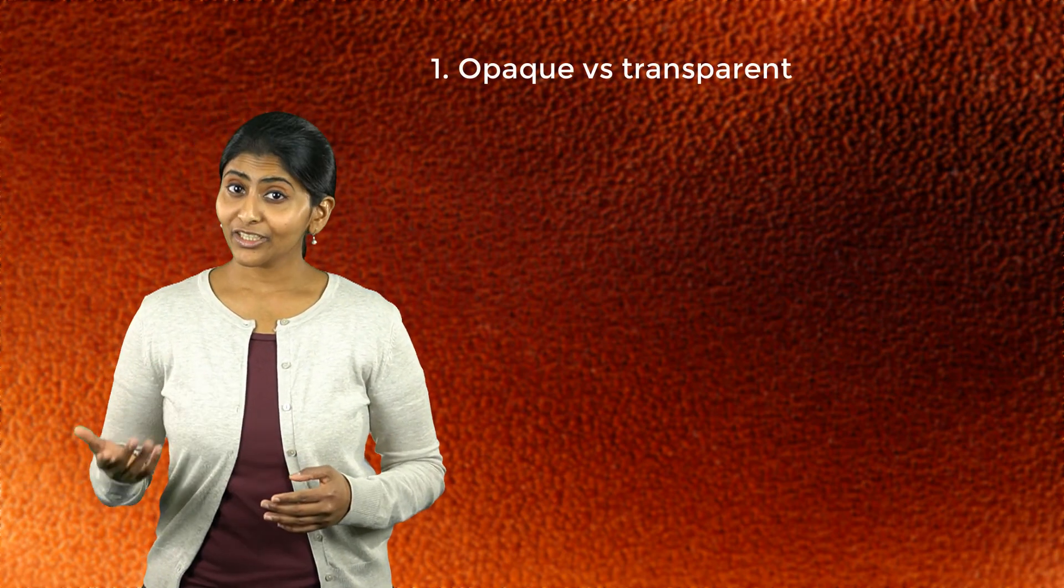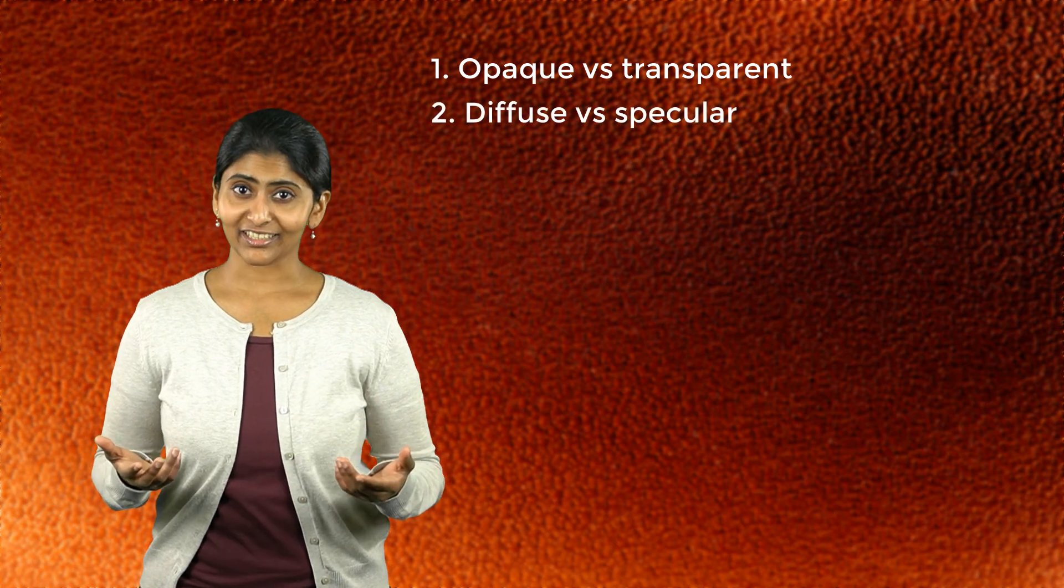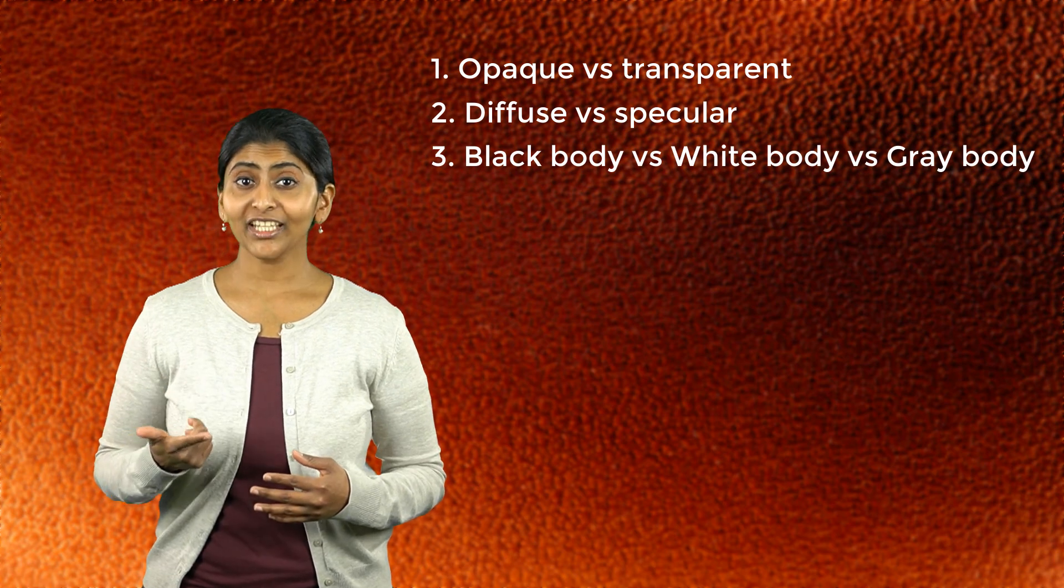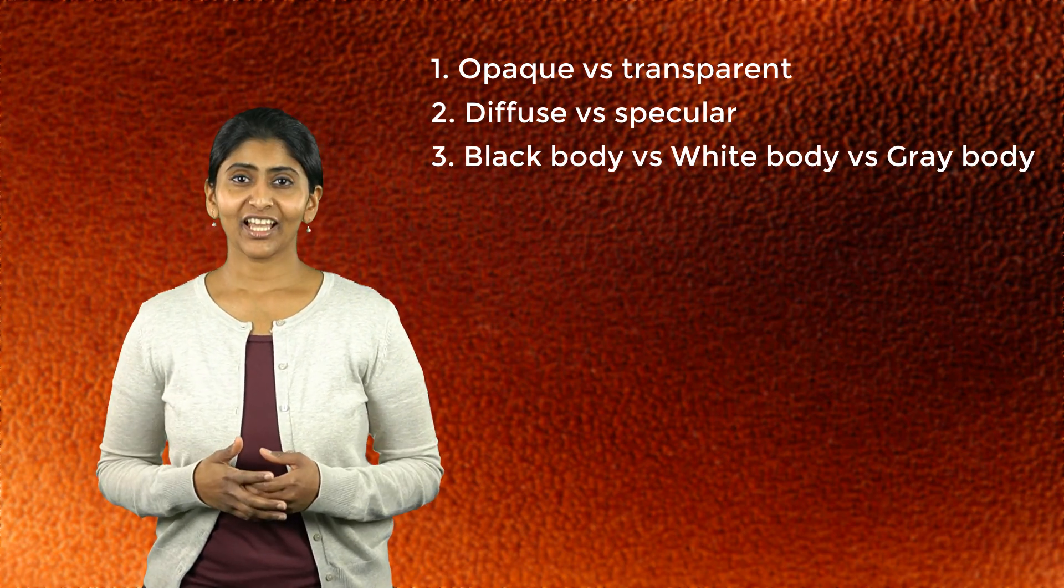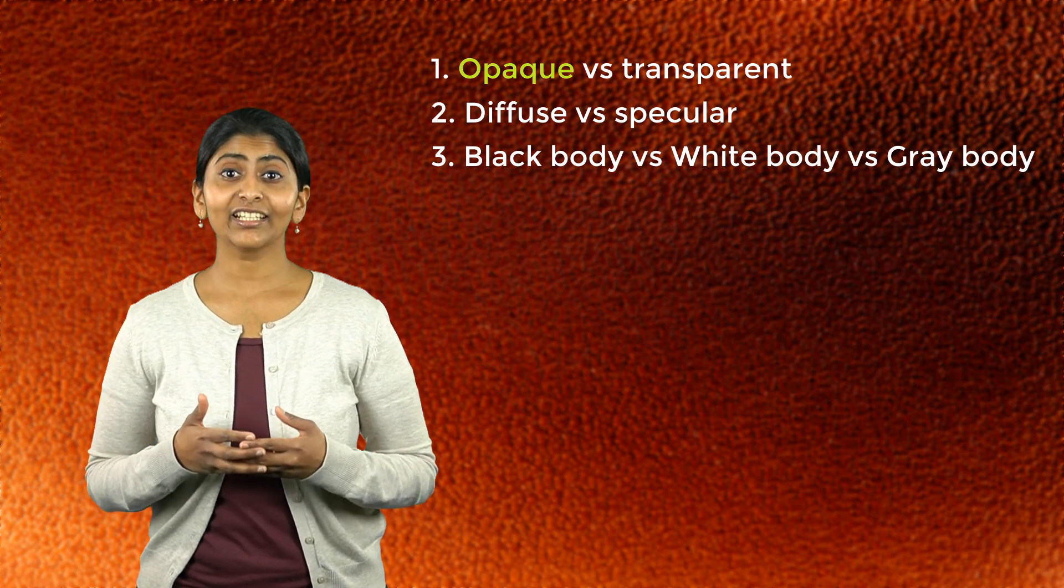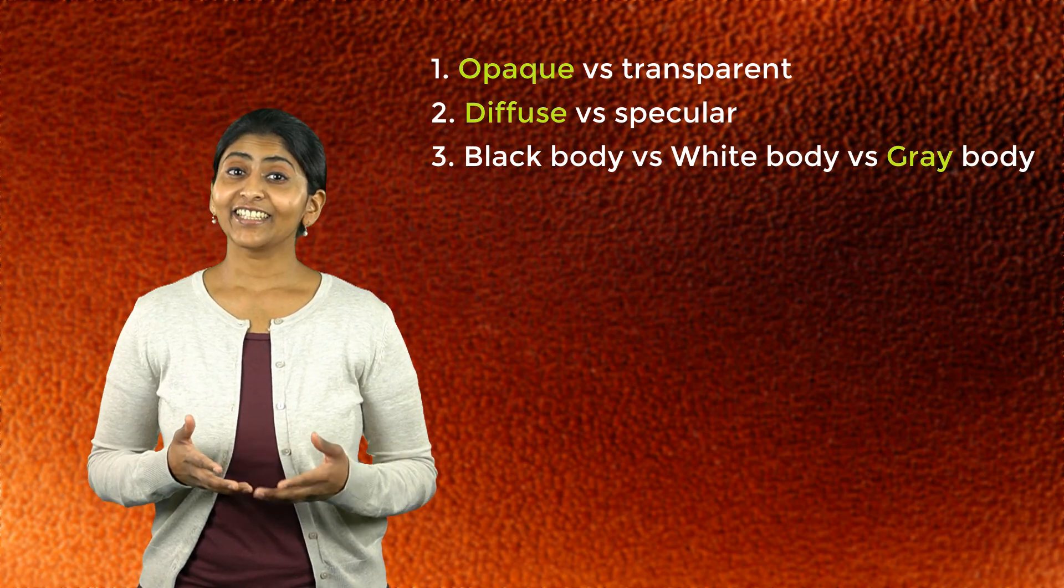So now, we know how to differentiate between opaque and transparent radiation, between diffuse and specular radiation, and we also learned what the terms black body, white body and grey body mean. In this course, we will talk about opaque, grey, diffuse radiation. That is, the bodies considered here cannot transmit any radiation, and their surfaces are diffuse surfaces, which emit or reflect radiation in all directions in a similar manner.